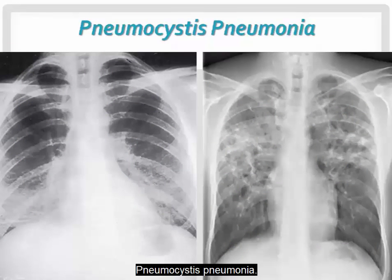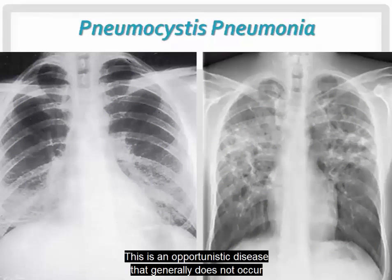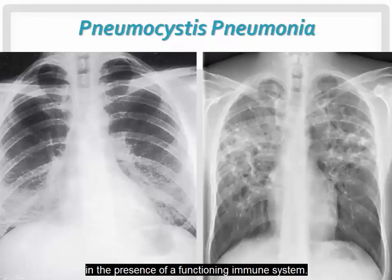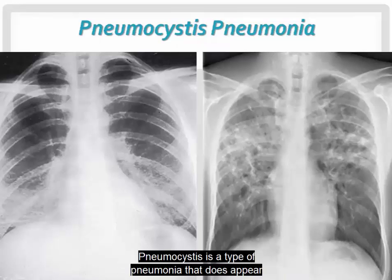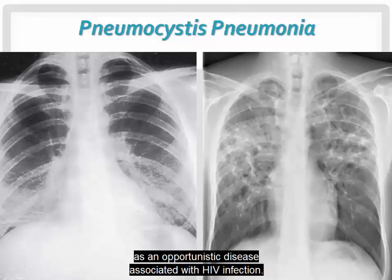Pneumocystis pneumonia is an opportunistic disease that generally does not occur in the presence of a functioning immune system, but does appear as an opportunistic disease associated with HIV infection.